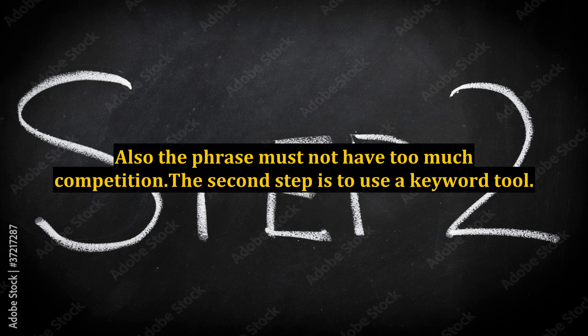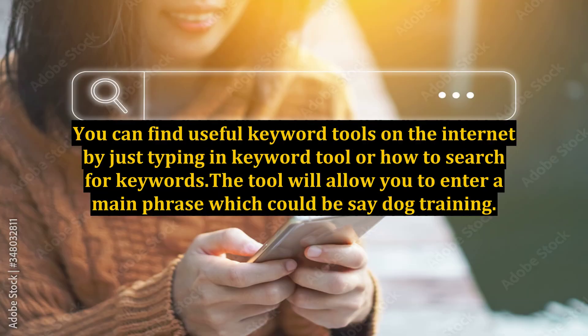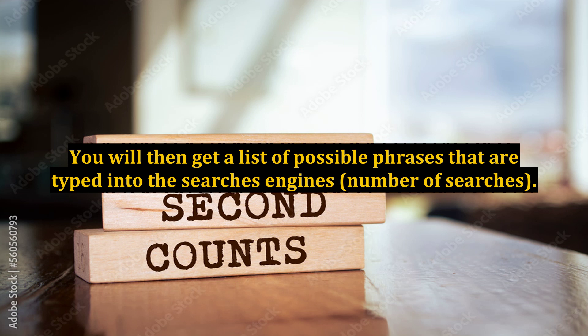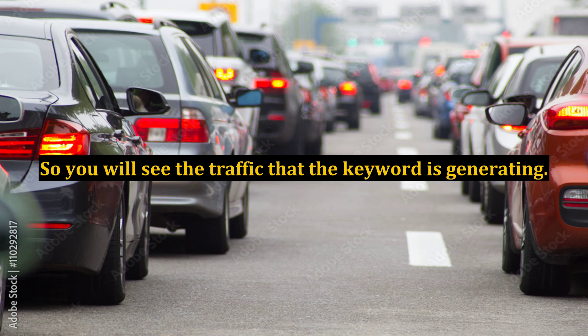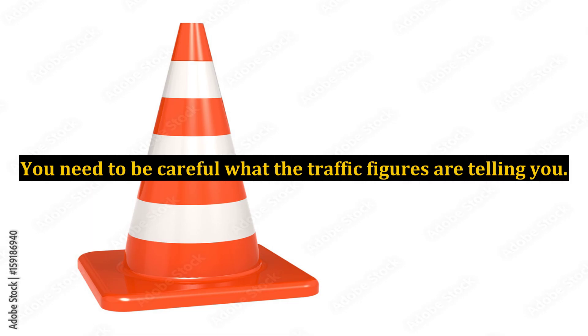The second step is to use a keyword tool. You can find useful keyword tools on the internet by just typing in 'keyword tool' or 'how to search for keywords.' The tool will allow you to enter a main phrase, which could be say 'dog training.' You will then get a list of possible phrases that are typed into the search engines and the number of searches, so you will see the traffic that the keyword is generating.